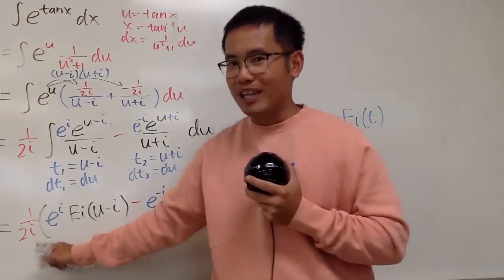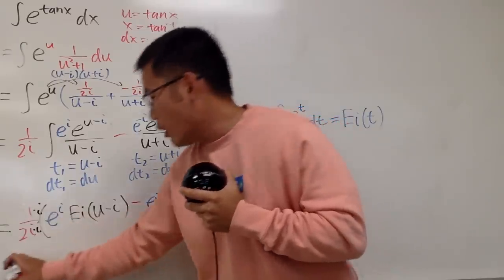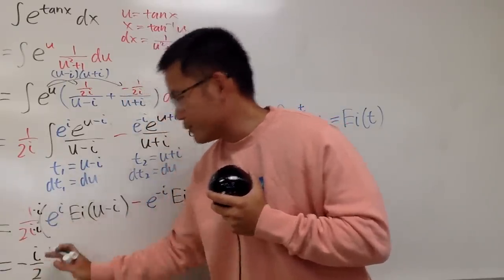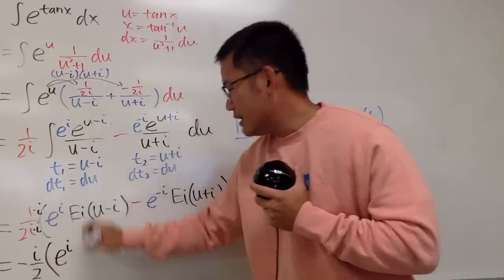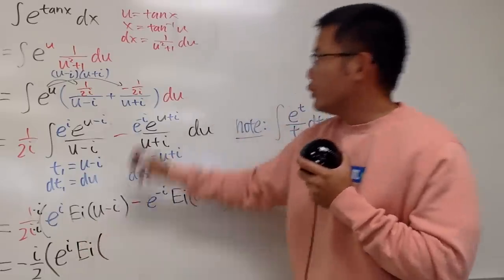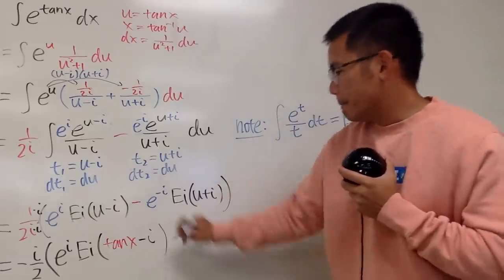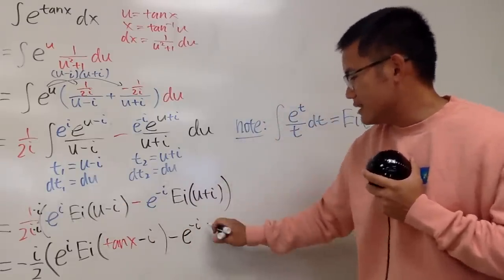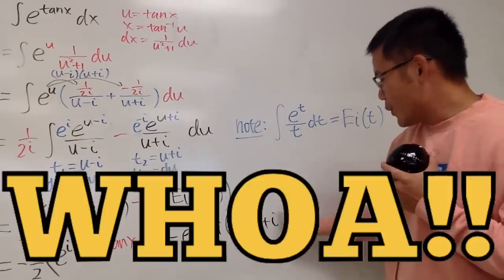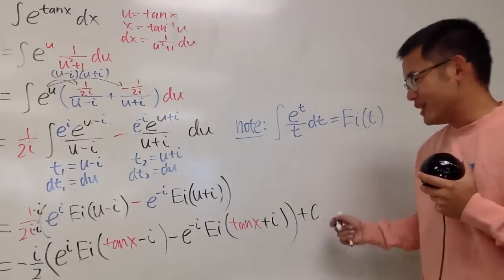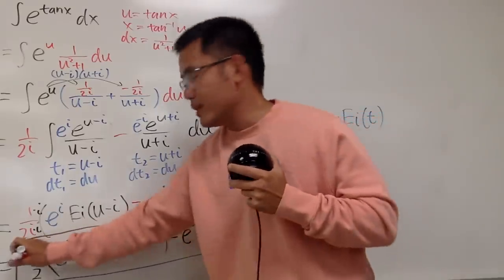To clear the complex denominator, multiply 1 over 2i by i over i: i times i is negative 1, so the prefactor becomes negative i over 2. The final answer is: negative i over 2, times the quantity e to the i times Ei of (tan x minus i) minus e to the negative i times Ei of (tan x plus i), plus C. This is not elementary, but don't forget the plus C — very, very cool.